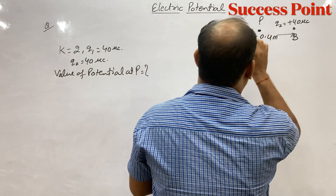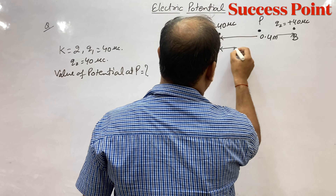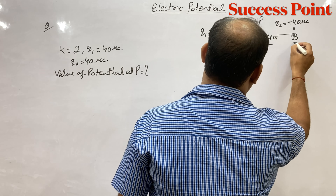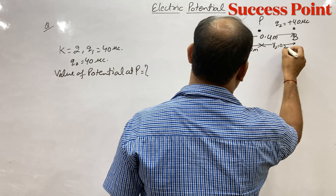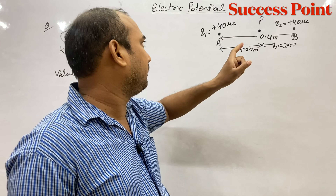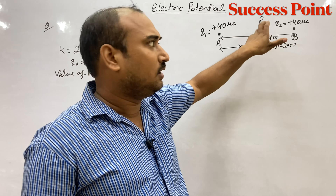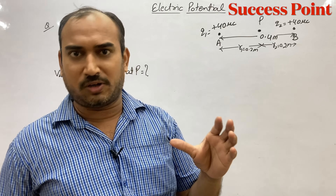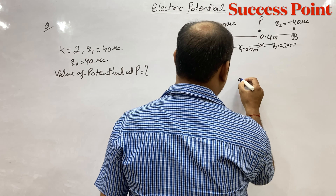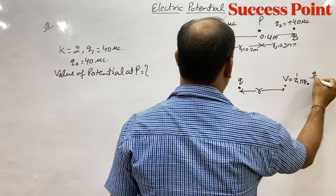Bacho, hamko iske midpoint pe net potential find karna hai. Midpoint beech mein hoga. Total distance 0.4 m thi, to midpoint se dono charges ki distance 0.2 meter hogi. Formula: agar koi charge Q rakha hai aur R distance pe potential nikalna hai, to V = 1/(4πε₀) × Q/R. Lekin agar dielectric constant K ho, to V = 1/(4πε₀K) × Q/R. Yahan dielectric constant K = 2 hai.